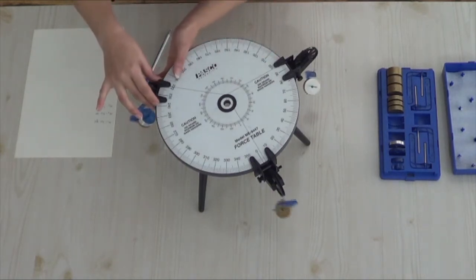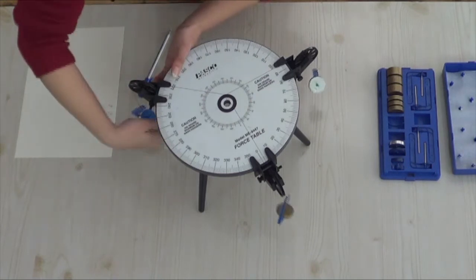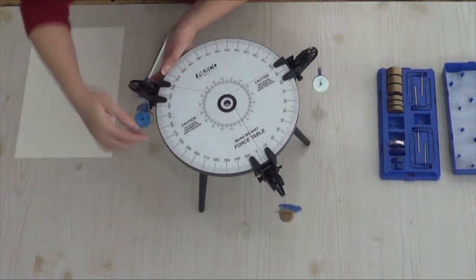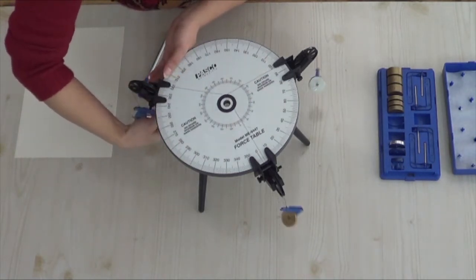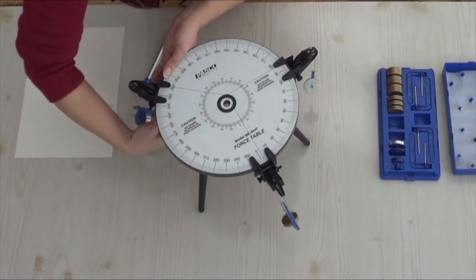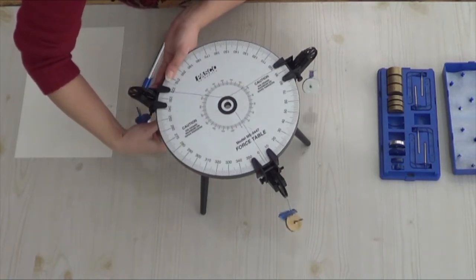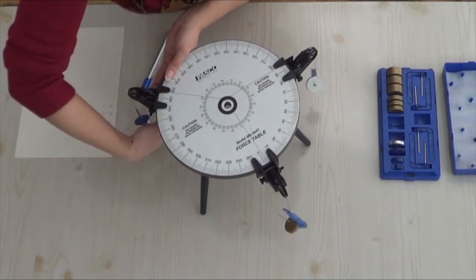If the knot does not seem to be centered well enough, you may try to change the position of the third pulley clamp accordingly. While doing so, please make sure that it is between 180 and 270 degrees.